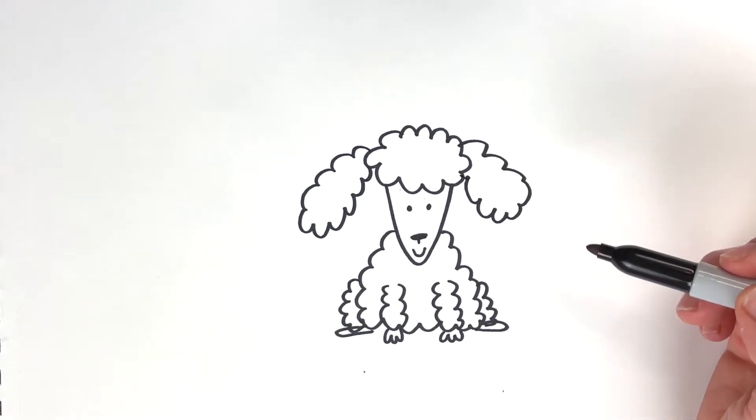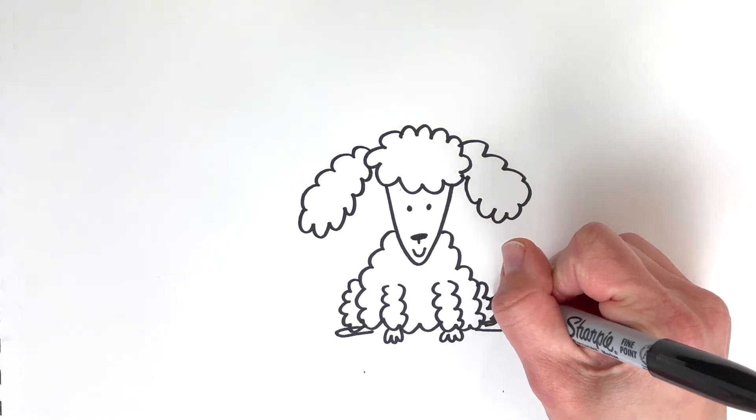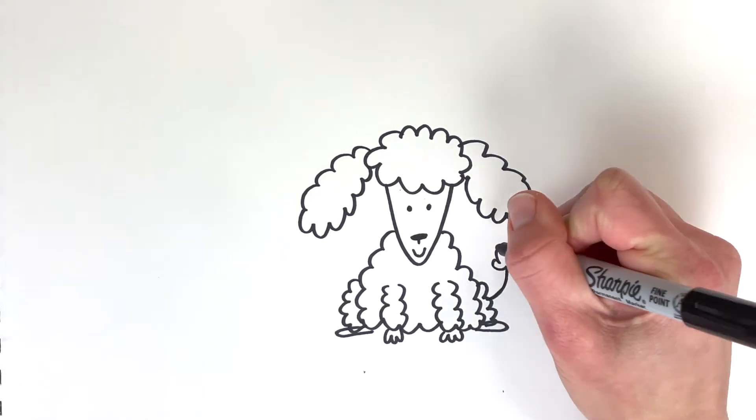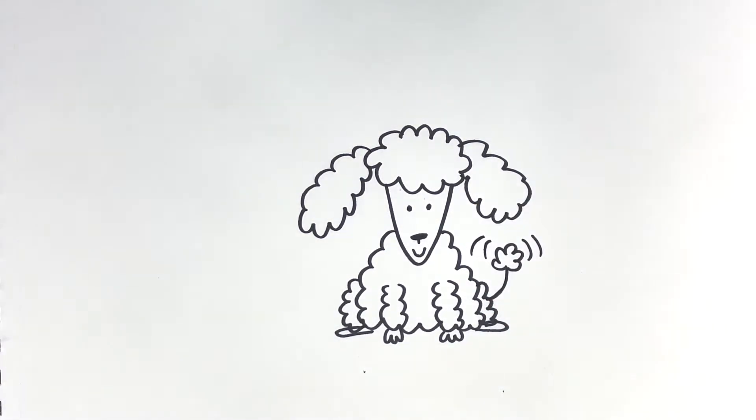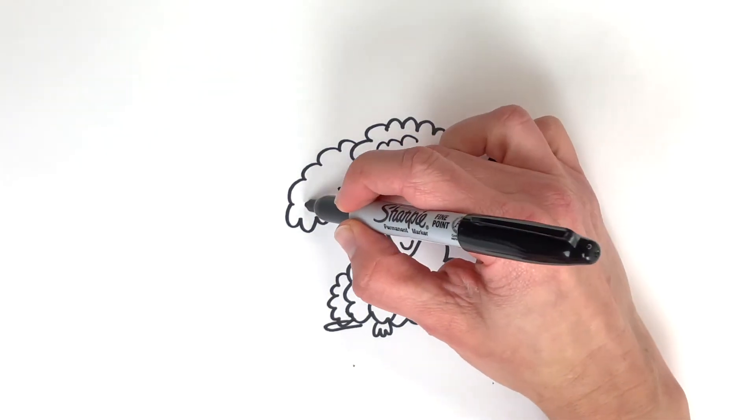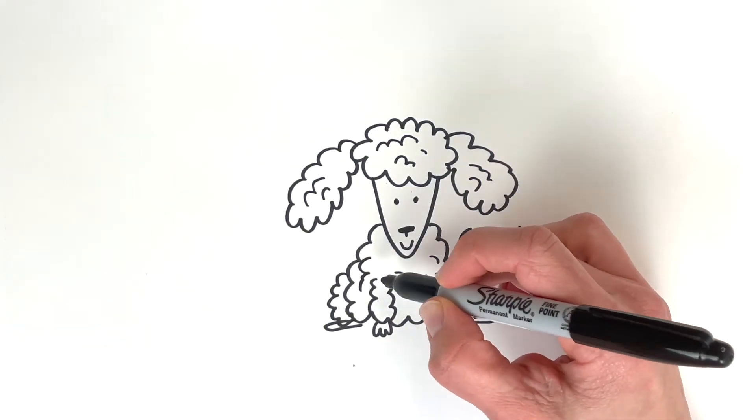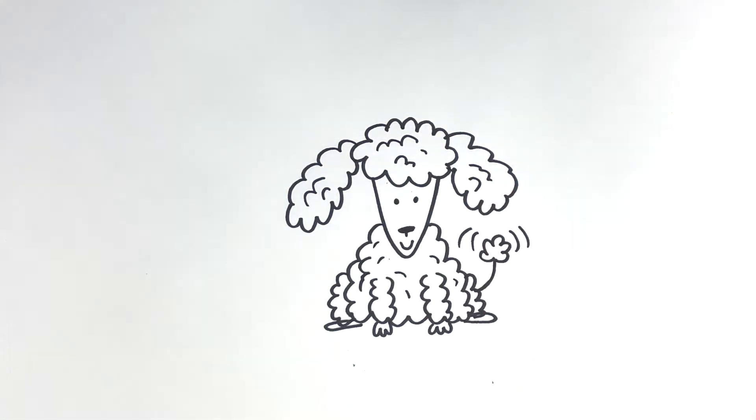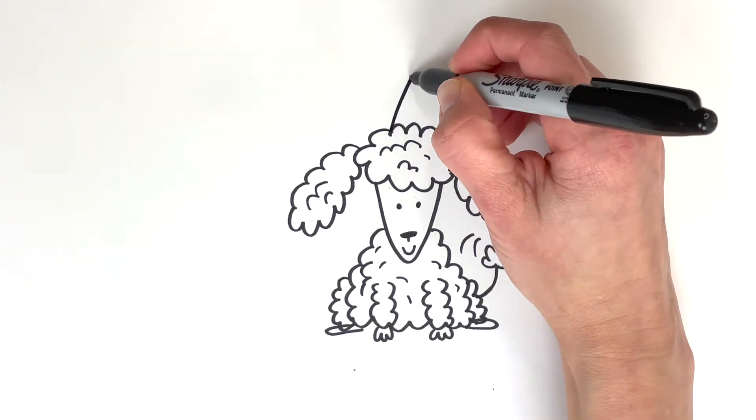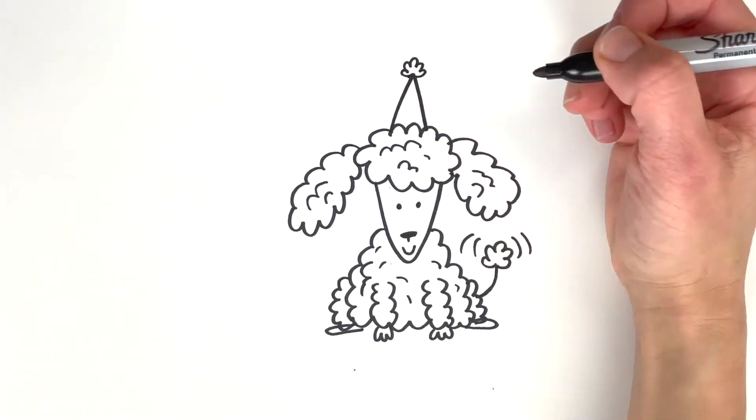Oh, really cute. And then a tail can be wagging with a line. Looks like a dandelion or something. Oh, cute. And then maybe there's, you can add a little bit of extra lines to show how fluffy this poodle is. And this poodle definitely needs a party hat, right? So party hats on everybody. Cute. And then a pom-pom because definitely, right? Because it's a poodle.